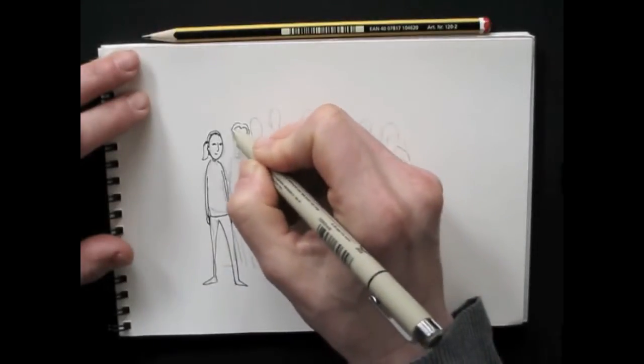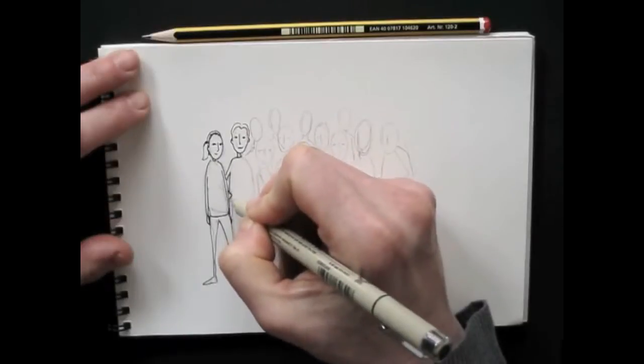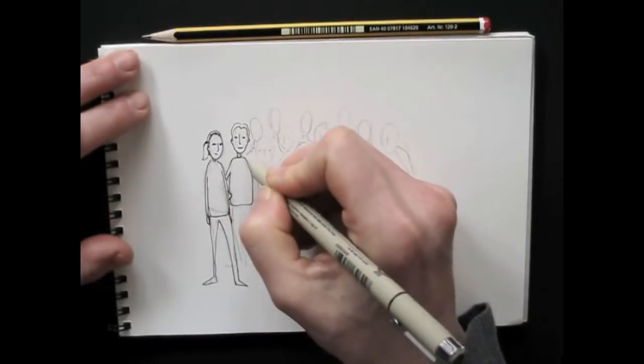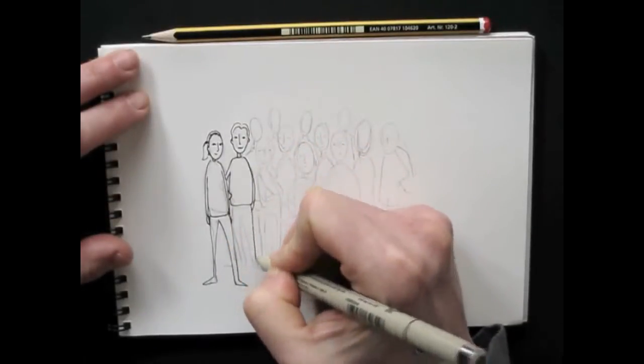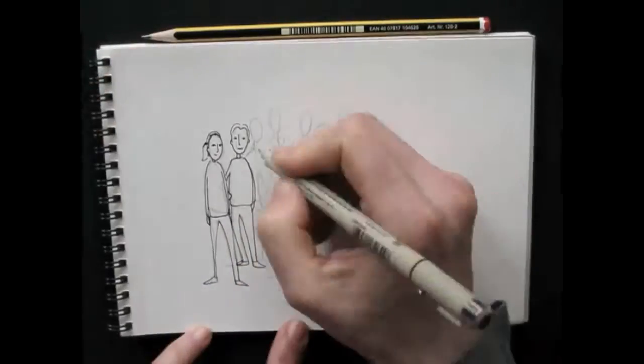Basically you make an egg shape, two lines for the neck, a sort of oval shape for the upper body and three or four lines not quite parallel for the legs. Triangles for feet and there you go.